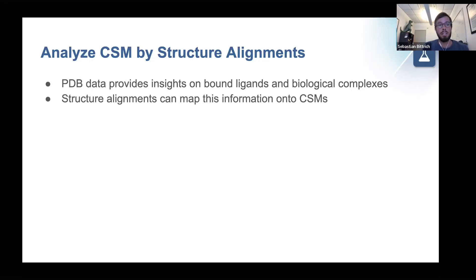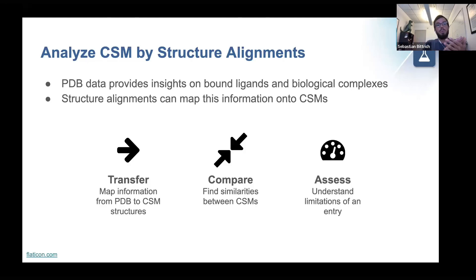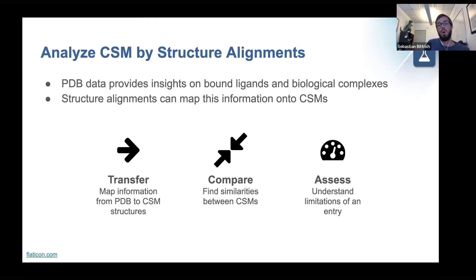Computed structure models are kind of information-sparse. But if you're looking at one particular sequence, you might want to know for a computed structure model where a ligand can bind. Computed structure models can be enriched by information coming from PDB structures — you can transfer or map information from PDB structures onto computed structure models. We have 1 million computed structure models integrated at this point, so it's a large set of data that is difficult to navigate, and structure alignments can help with that.